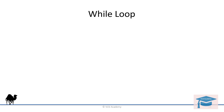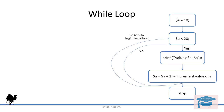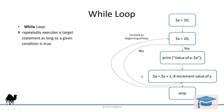If you observe the flowchart of a while loop, it will look something like this. Here you declare a variable, put the condition, and go inside the loop if it satisfies the condition, keeping on looping as long as you satisfy the condition. So a while loop will actually repeatedly execute a target statement as long as the given condition is true.